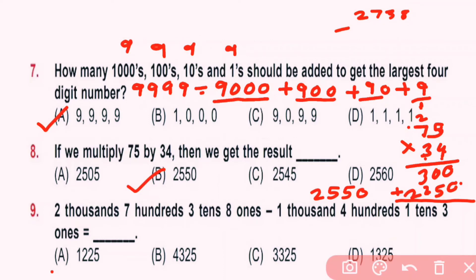Question number 9: 2000 then 700, 3 tens, and 8 ones minus 1000, 400, 1 tens, and 3 ones. 8 minus 3 is 5, then 3 minus 1 is 2, 7 minus 4 is 3, and 2 minus 1 is 1. So answer is 1325. D is correct answer.